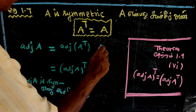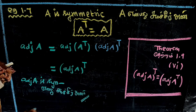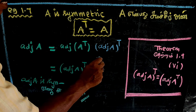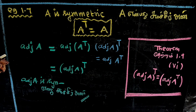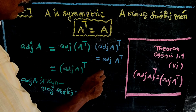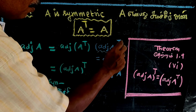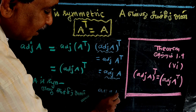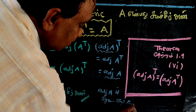(AᵀA) whole transpose is equal to AᵀA. Now, if (AᵀA) whole transpose is equal to AᵀA, that means AᵀA is symmetric.